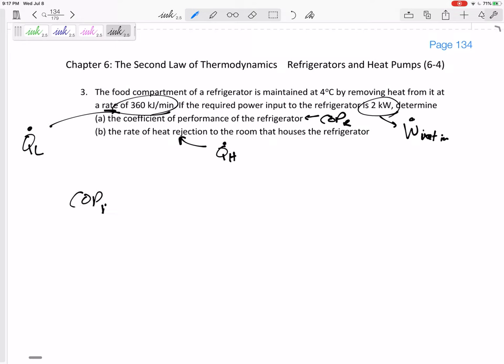So we have a few equations for coefficient of performance for refrigerator. One of them is Q_L dot over W_in dot. So this is just 360 kilojoules per minute over the work in of 2 kilowatts. Now, this coefficient of performance is unitless. These units don't exactly work out. What is a kilowatt? A kilowatt is a kilojoule per second. So I need to convert minutes to seconds. Dividing it by 60 would be good.